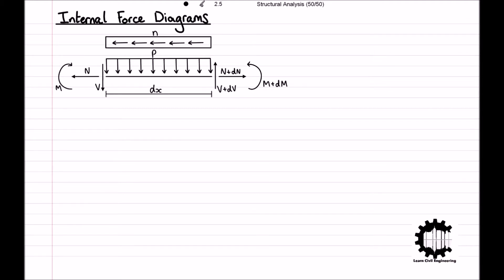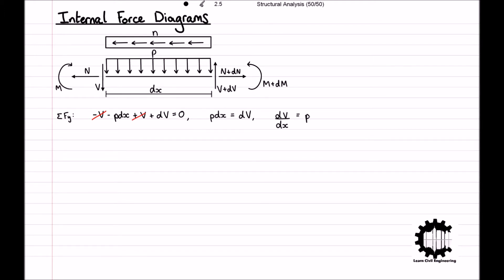Having established the conditions for our section of bar, we will apply the conditions of equilibrium. Equating the sum of all vertical forces to equal zero, we get: negative V minus p times dx plus V plus dV equals zero. The negative V cancels with the positive V, giving us p·dx equals dV, which rearranges to dV/dx equals p.